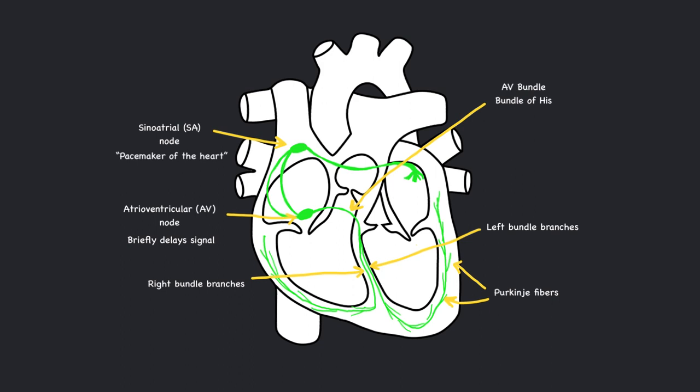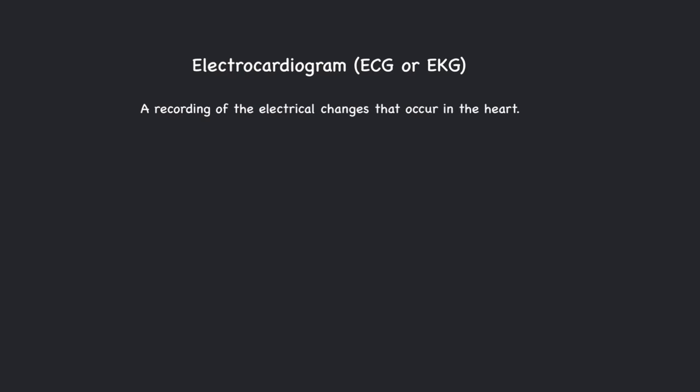Since these action potentials that travel through the heart to make it contract are electrical signals, we can detect these electrical currents through electrodes that are placed on the body's surface. An electrocardiogram, which is abbreviated ECG or EKG, is a recording of the electrical changes that occur in the heart. The electrodes are placed at six different positions on the chest, arms, and legs. These electrodes pick up the electrical signals generated by the heart, which are then amplified and displayed as a series of waves on a graph.